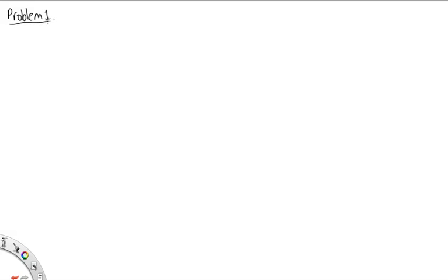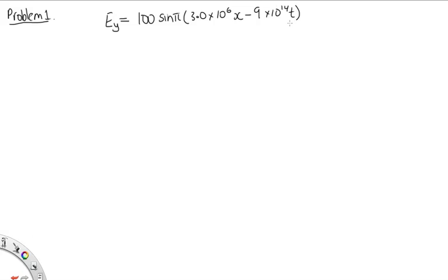Problem 1. The electric field component of a particular light wave propagating in a vacuum is given by E_Y equals 100 sine of pi times (3 × 10⁶ x minus 9 × 10¹⁴ t). To answer this question, we should record the wave equation from Physics 1A.